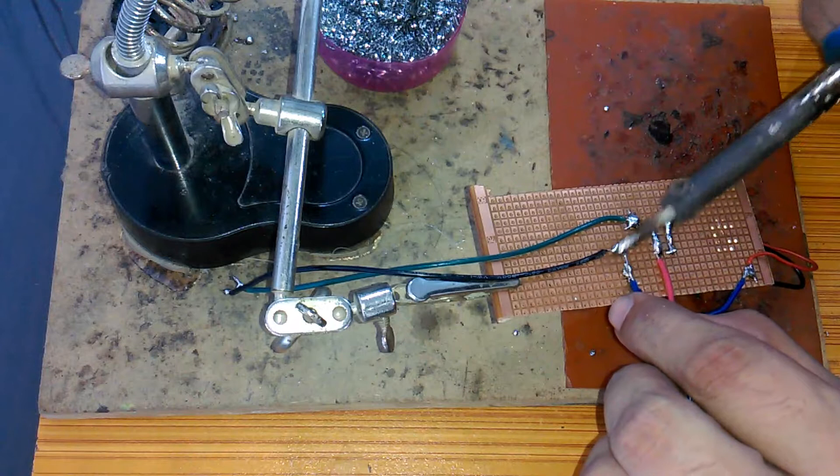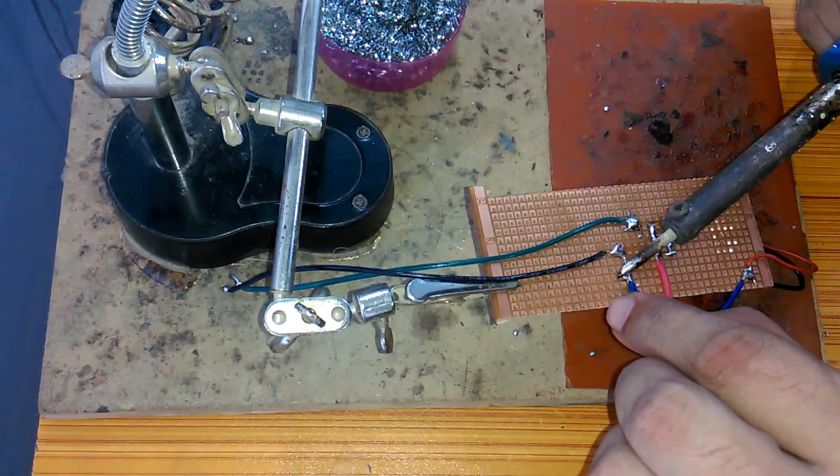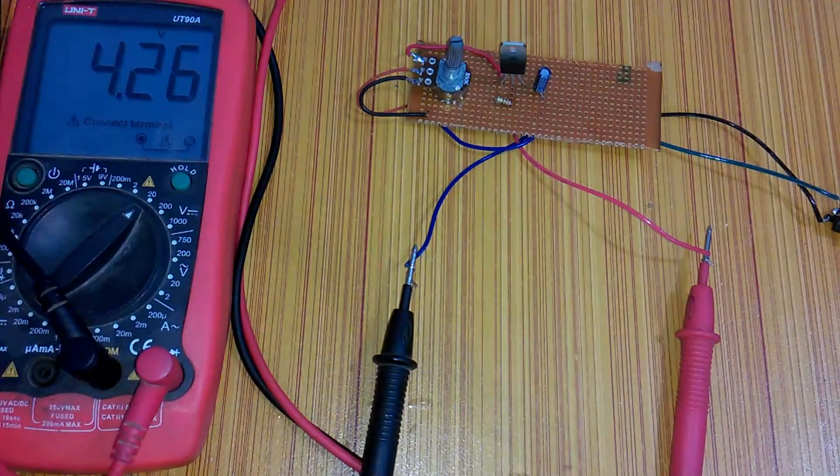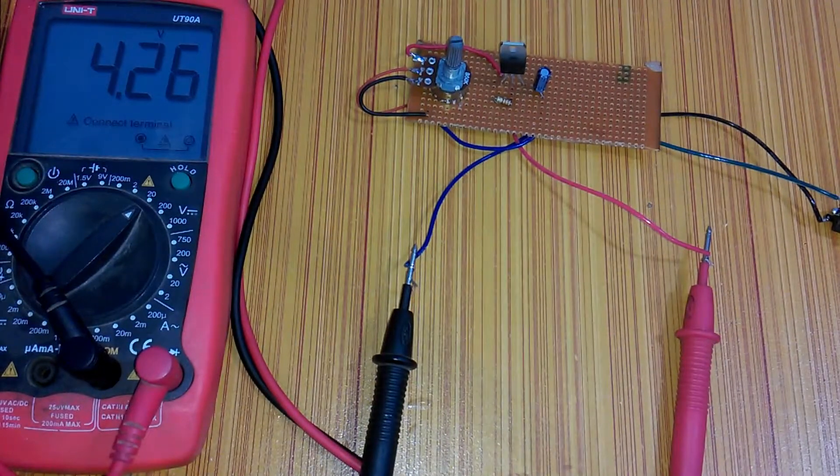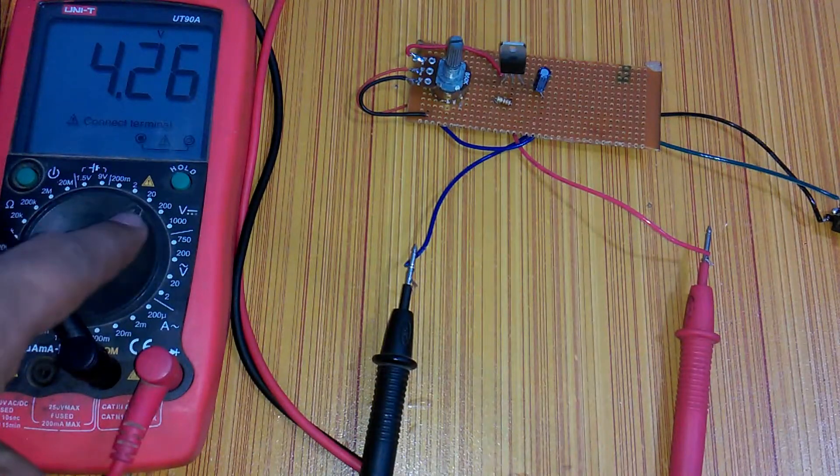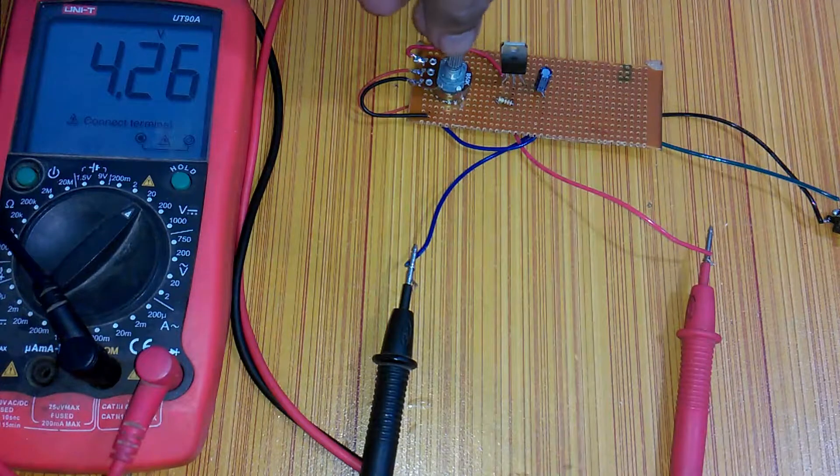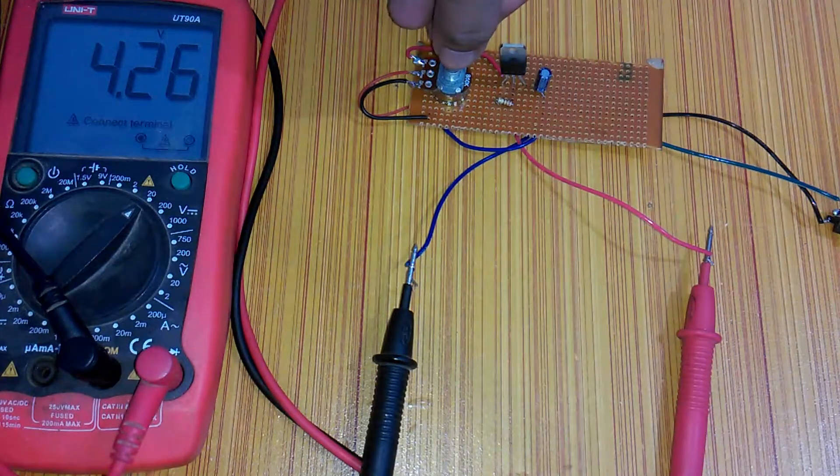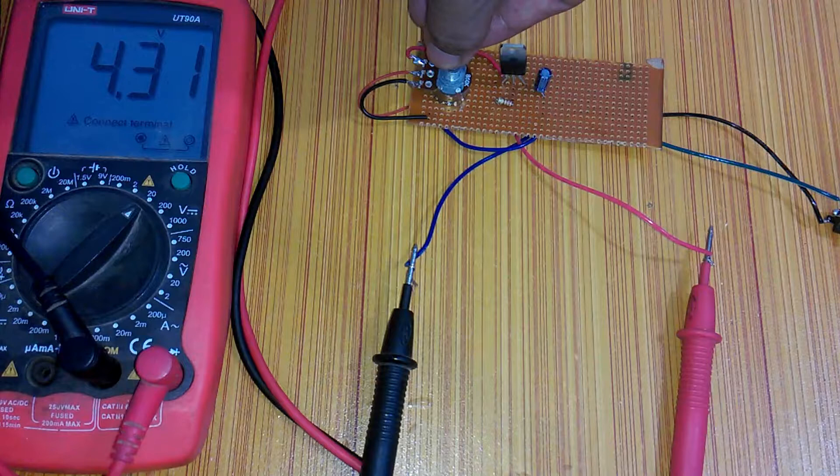The output voltage will be available on these two wires. On the output side, I am using a 5 volt adapter. The digital multimeter is set on 20 volts, and now by rotating the potentiometer, we can change the output voltage. This variable power supply is ready and can be used to power up different electronic circuits.